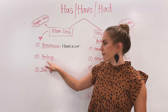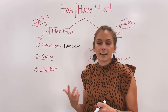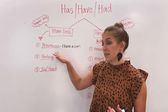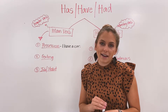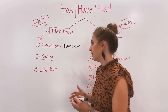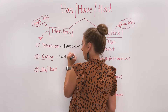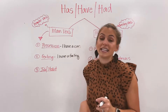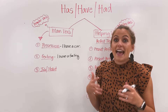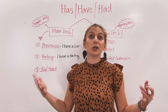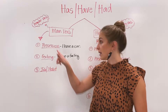The next example is a feeling. Maybe it's not a possession — maybe it's not something physical, but it's something emotional that you have. For example: I have a feeling that something is not right. I have a really happy feeling, a really good feeling about this. So it can be emotional as well as physical.